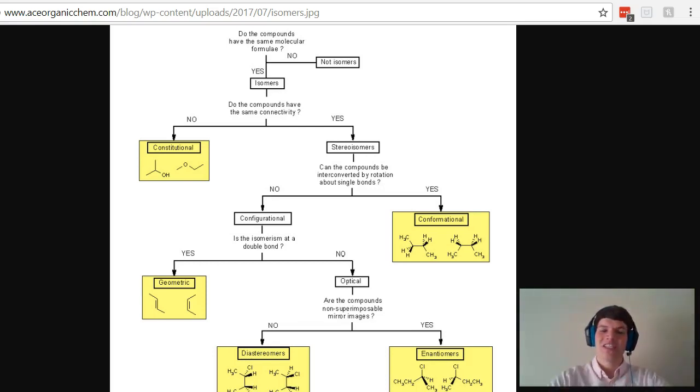And notice that the only difference between these two compounds is that if I rotate this side into the clockwise direction, then they basically become the same exact compound. It's the way that they're oriented, the way that the bonds are rotated, that makes them different from each other. So we call these conformational isomers.